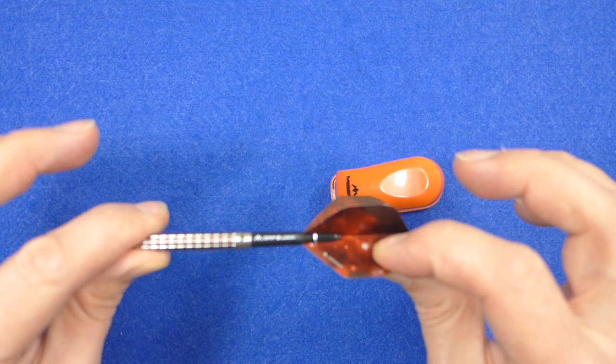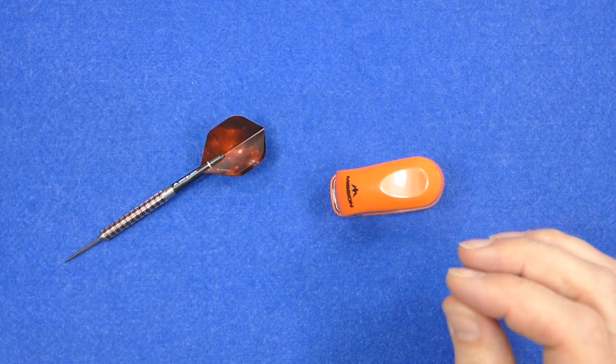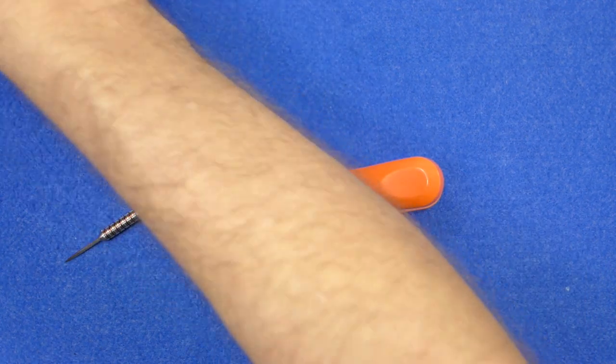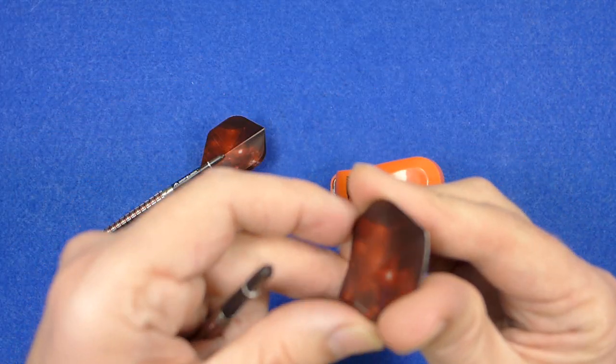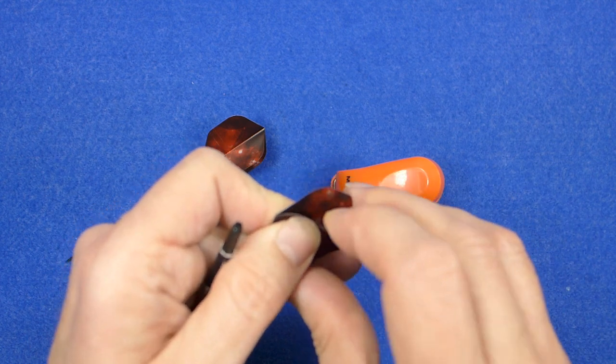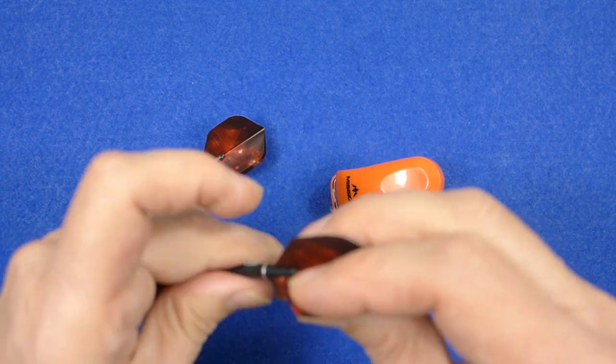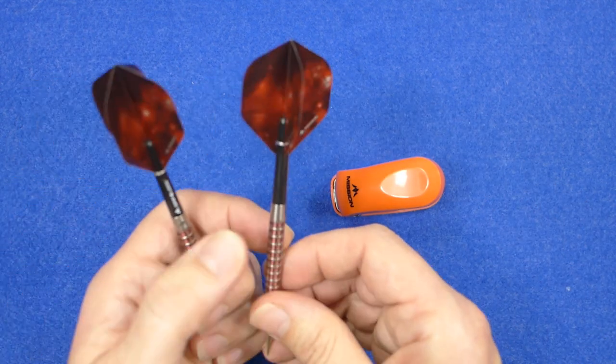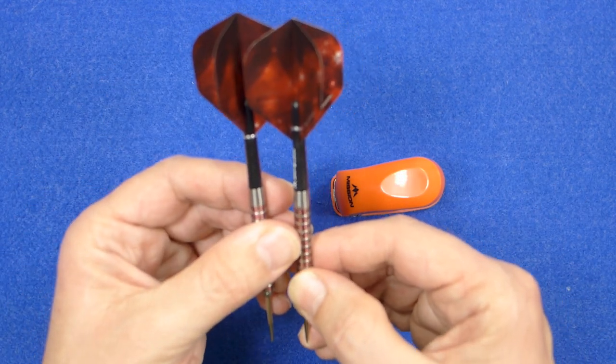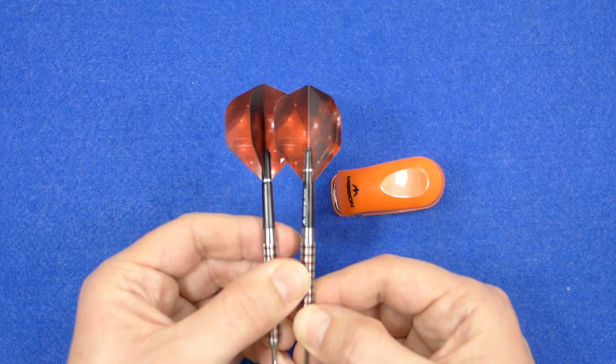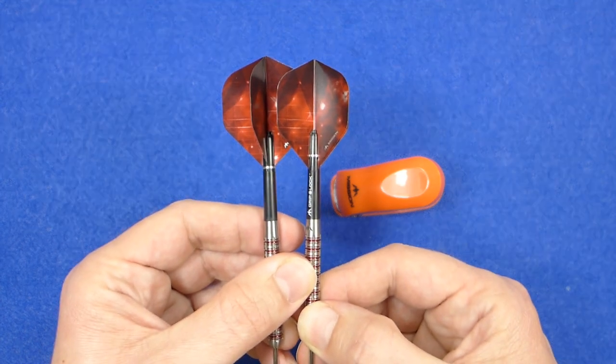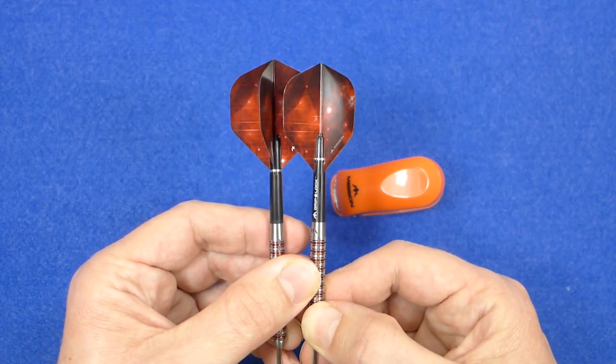So that's what it's like with the flight on. I'll just take a flight that hasn't been punched and I'll leave the ring on and see if I'll line them up. So you can see it's just put the flight a little bit further down.